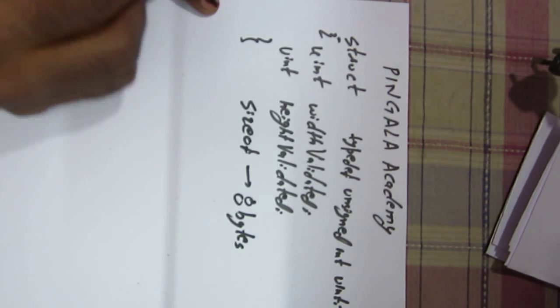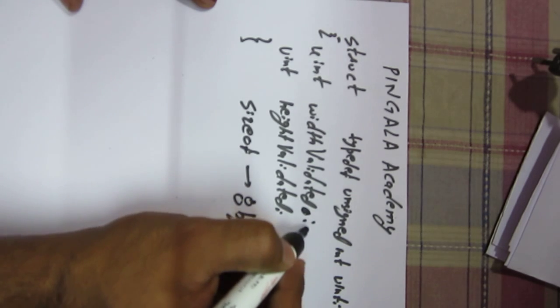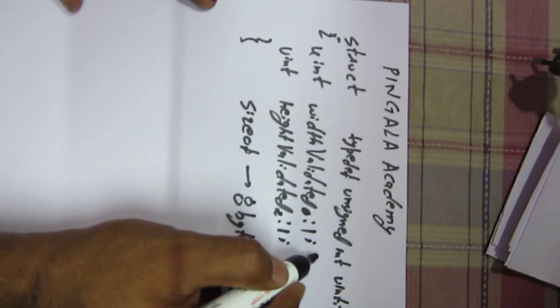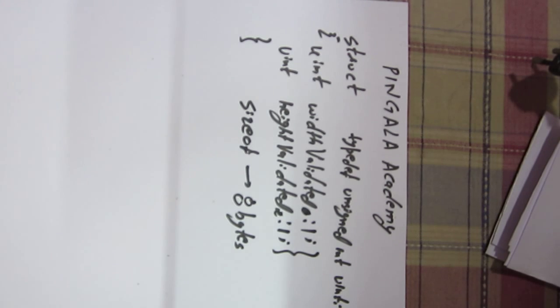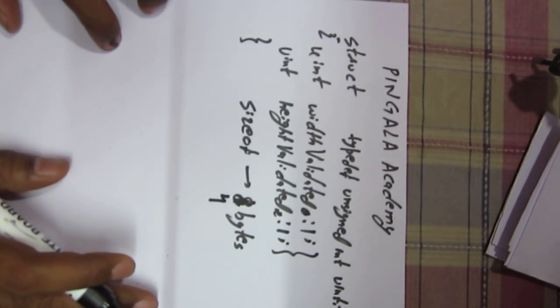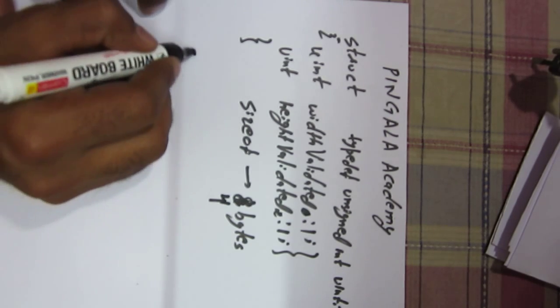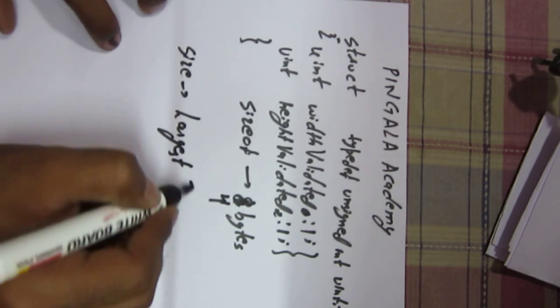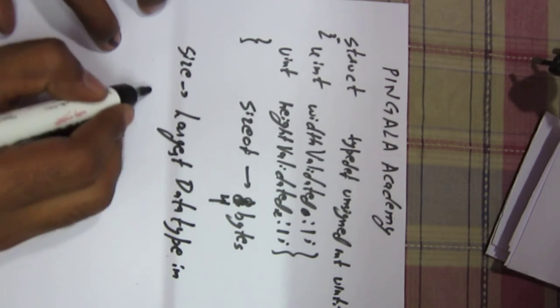But if we do it using bit fields—if we write it as 1 here and 1 here—in this case we have changed the variables to store a single bit only. So the size would be 4 bytes only, because in bit fields the size taken is the largest data type present in the structure.